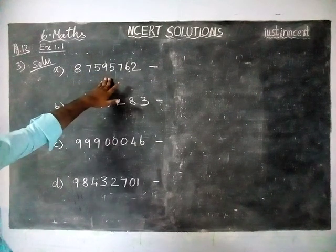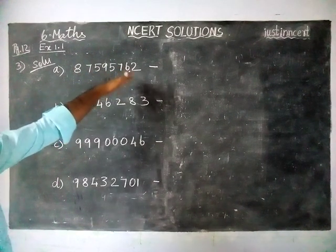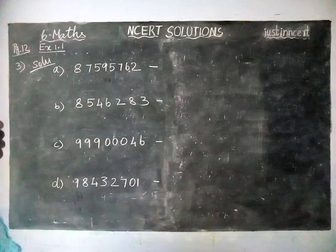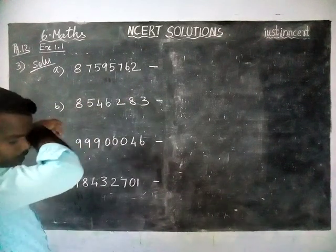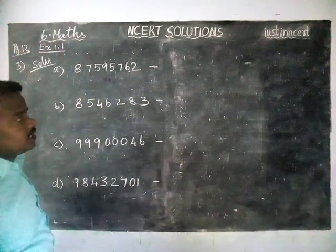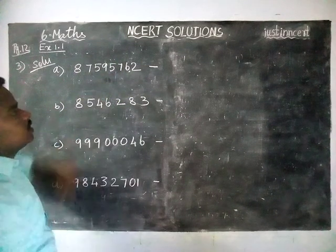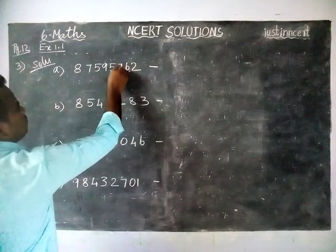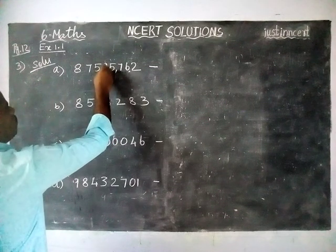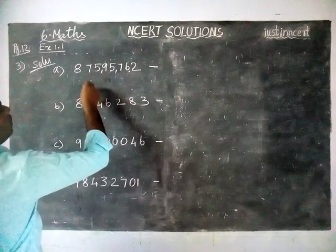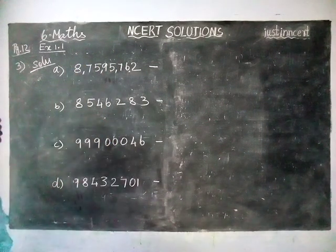Then we have to write the number name in the Indian system of numeration. In the Indian system of numeration, from the right-hand side: first three digits — ones, tens, hundreds — then one comma. Next: thousands, ten thousands — one comma. Then: lakhs, ten lakhs — one comma. Then crores.